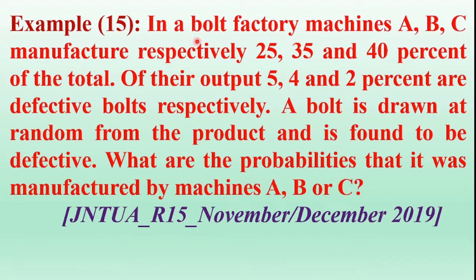The example is: in a bolt factory, machines A, B, and C manufacture respectively 25%, 35%, and 40% of the total output. Of their output, 5%, 4%, and 2% are defective bolts respectively. A bolt is drawn at random from the product and is found to be defective. What are the probabilities that it was manufactured by machine A, B, or C?